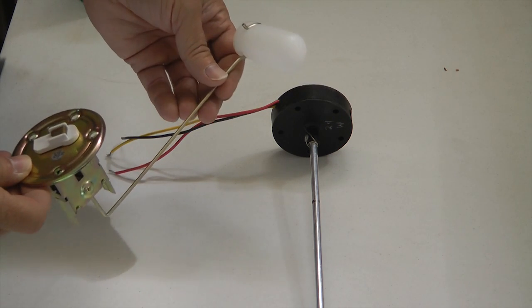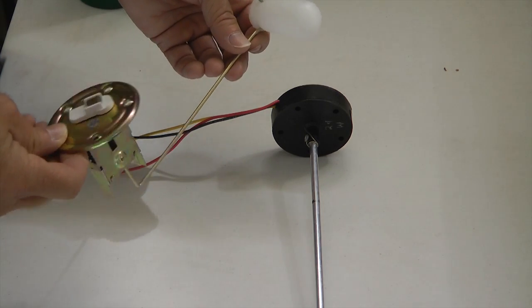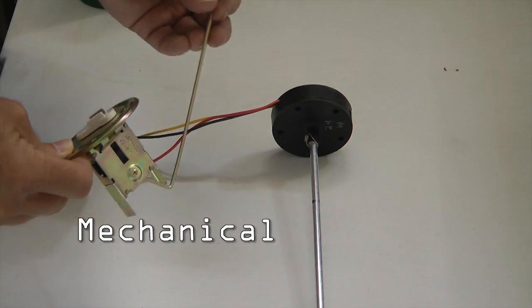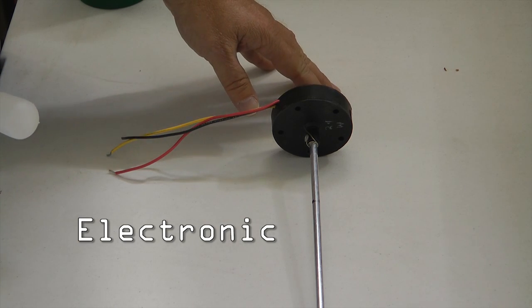There are two categories of fuel senders that we are going to talk about: the mechanical type and the electronic type.